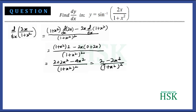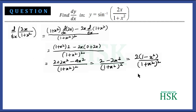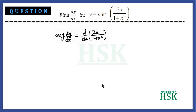This simplifies to (2 − 2x²)/(1+x²)², or 2(1−x²)/(1+x²)². So we have cos y · dy/dx = 2(1−x²)/(1+x²)², and now we need to convert cos y into terms of x.